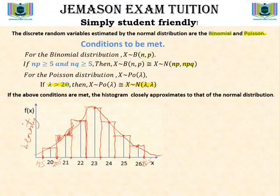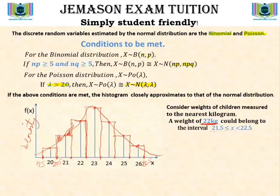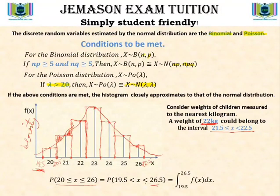To estimate the probability that x lies between 20 and 26 — these being discrete values — we need the extension to the left by 0.5 and to the right by 0.5, so we deal with ranges rather than integers. That is where continuity correction comes in: converting integer values into ranges by extending the lower boundary left by 0.5 and the upper boundary right by 0.5. For example, with weights measured to the nearest kilogram, a recorded weight of 22 could have come from the interval 21.5 ≤ x < 22.5, since any real number in that interval rounds to 22.